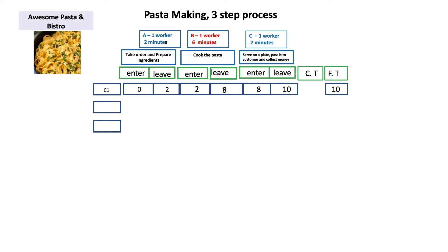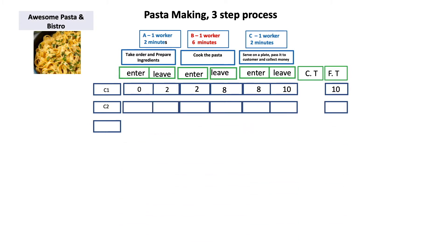Customer two comes in and places the order, but his order can only enter process step A at time equals two because process step A is busy with customer one's order. The second customer's order enters process step A at t=2 and leaves at time equals four minutes.